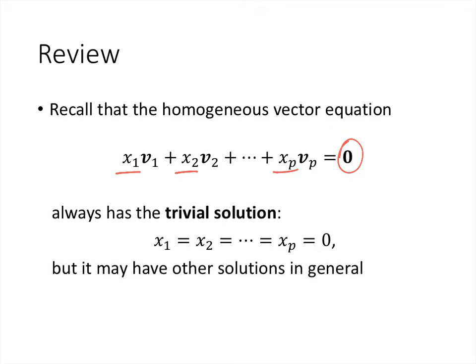Because it's a homogeneous equation, because we have this 0 on the right-hand side, one of the many solutions that this system could have is the trivial solution. If we put 0 in for x1 and 0 in for x2 all the way through 0 in for xp, if we multiply all of those v vectors by 0 and add up the results, of course we will get the 0 vector. But this homogeneous equation may have more solutions.